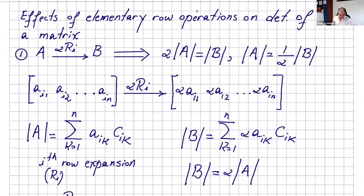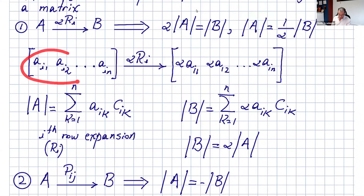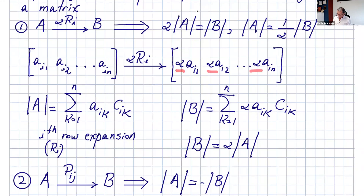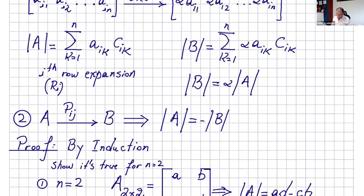I put a simple proof here. This is the i-th row of matrix A. We multiply it by alpha and it becomes that. The determinant of A expanded along that i-th row is given by this formula. The determinant of matrix B is given by alpha times a_{ik} times C_{ik}. I can factor that alpha out — it's just alpha times the determinant of A. Therefore the determinant of A is one over alpha times the determinant of B.